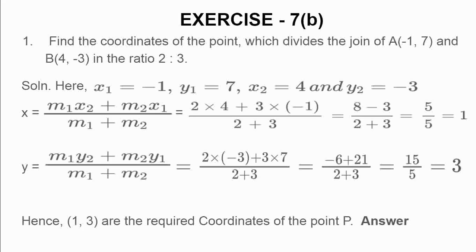Two points are there. One is a, one is b. In a, x1, y1, that is why I have written here x1 is equal to -1, y1 is equal to 7. Then you come to the next point b(4, -3). Then, in the ratio of 2 is to 3, that means m1 equal to 2 and m2 equal to 3.